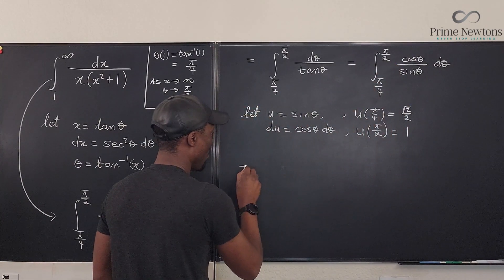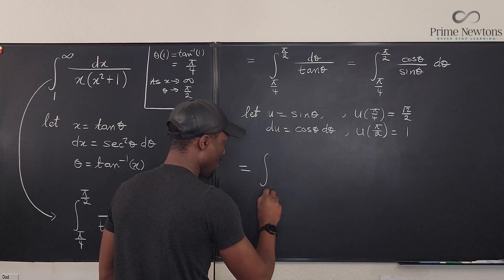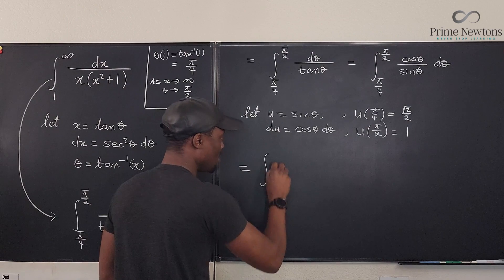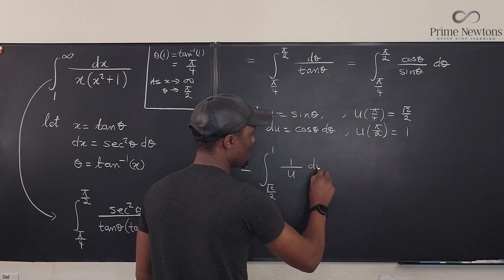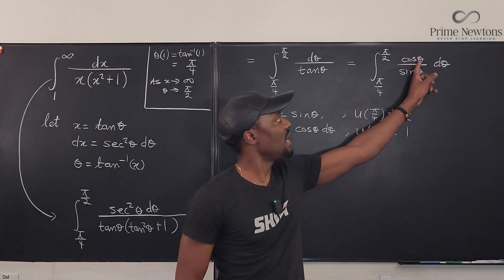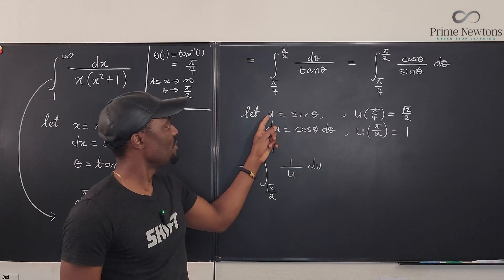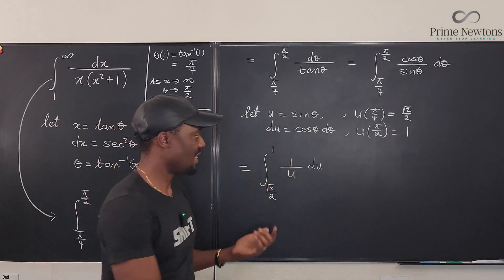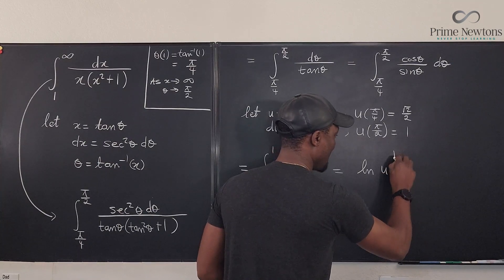So this integral, what we have is actually the integral from √2/2 to 1 of 1 over u du. Because cos θ dθ will be replaced with du and sin θ will be replaced with u. And you just test it. And that's just it. This is your natural log of u evaluated from...